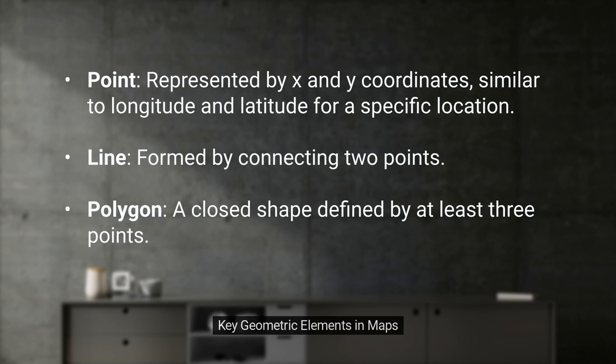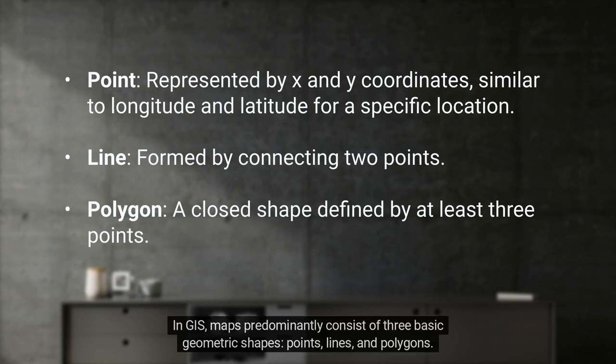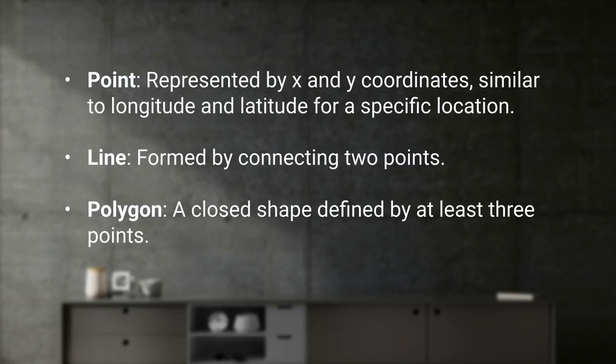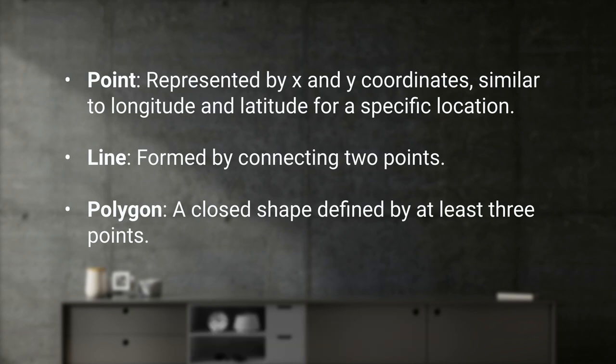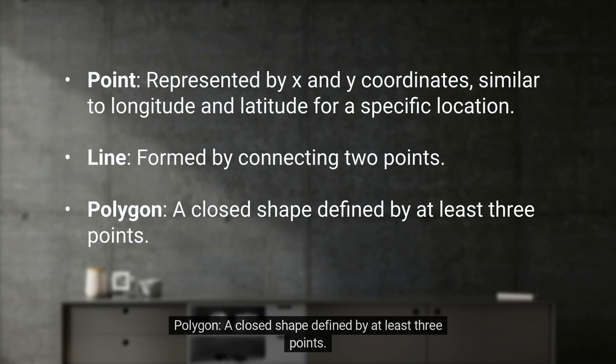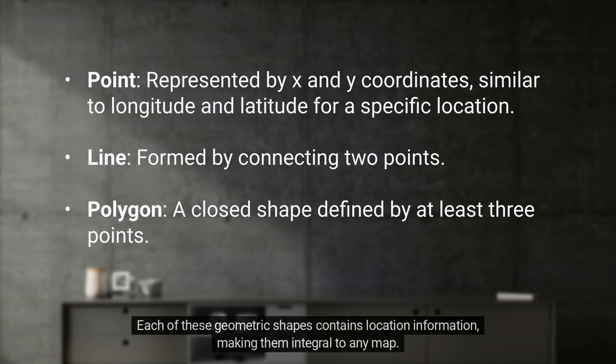In GIS, maps predominantly consist of three basic geometric shapes: points, lines, and polygons. A point is represented by x and y coordinates, similar to longitude and latitude for a specific location. A line is formed by connecting two points. A polygon is a closed shape defined by at least three points. Each of these geometric shapes contains location information, making them integral to any map.